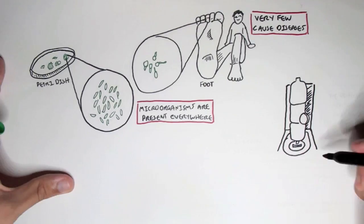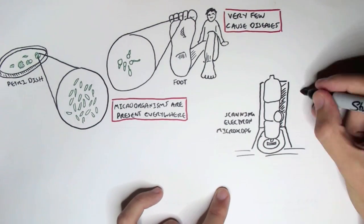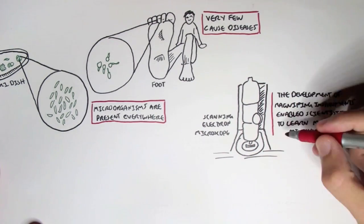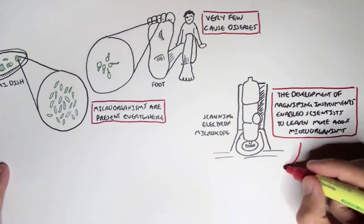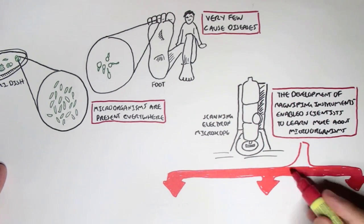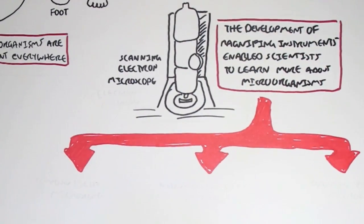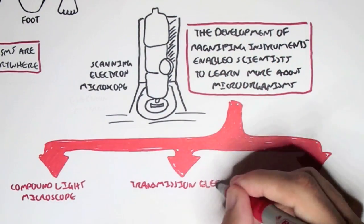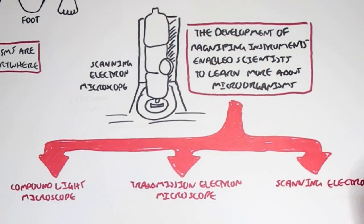And due to the development of magnifying instruments within a century, enabled scientists to learn much more about these microorganisms. And these magnifying instruments, there are three main ones. These are known as the Compound Light Microscope, the Transmission Electron Microscope, and the Scanning Electron Microscope.